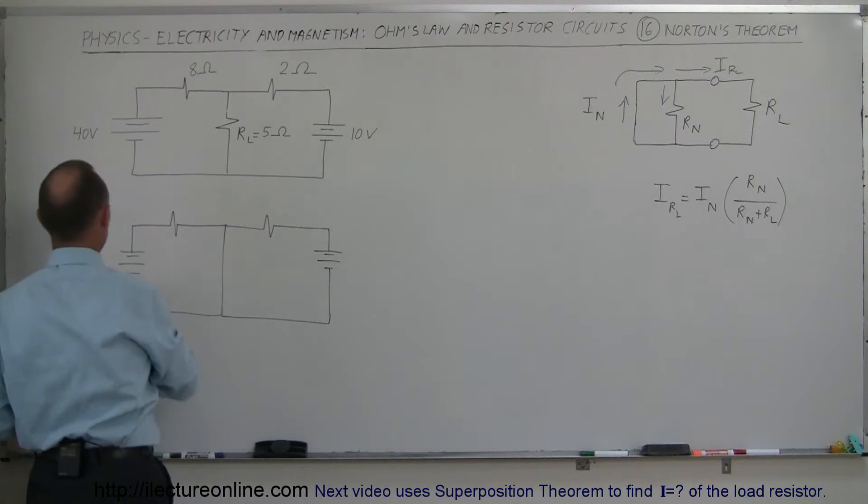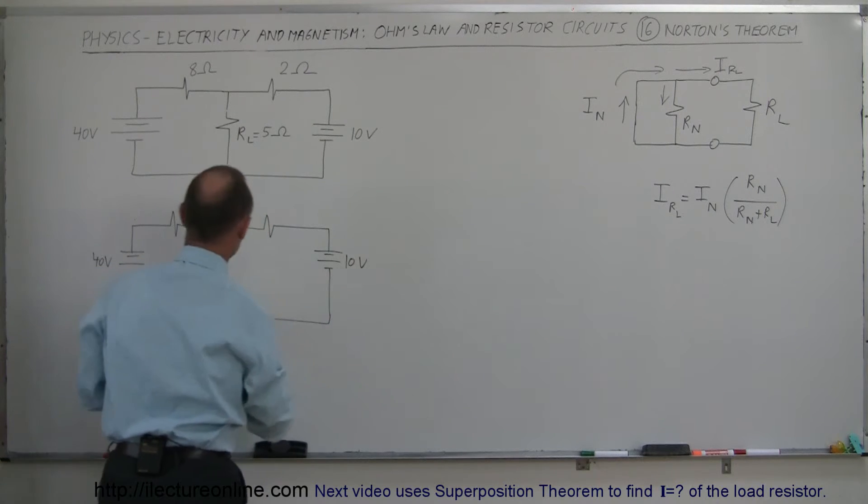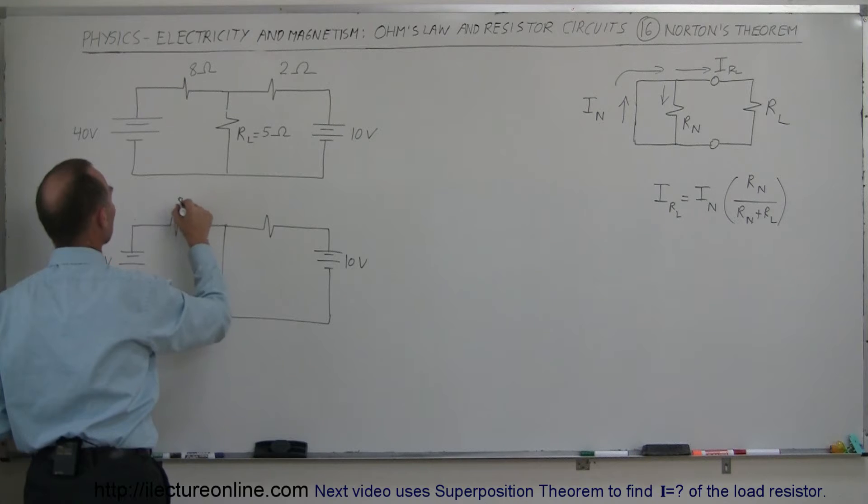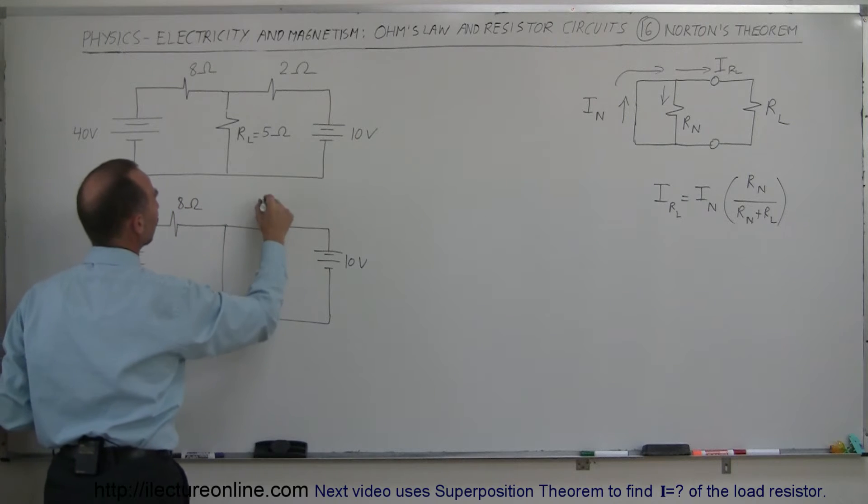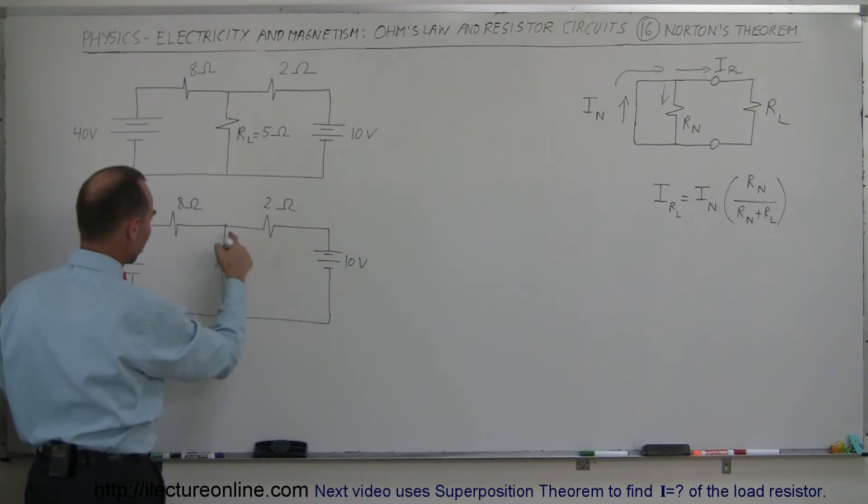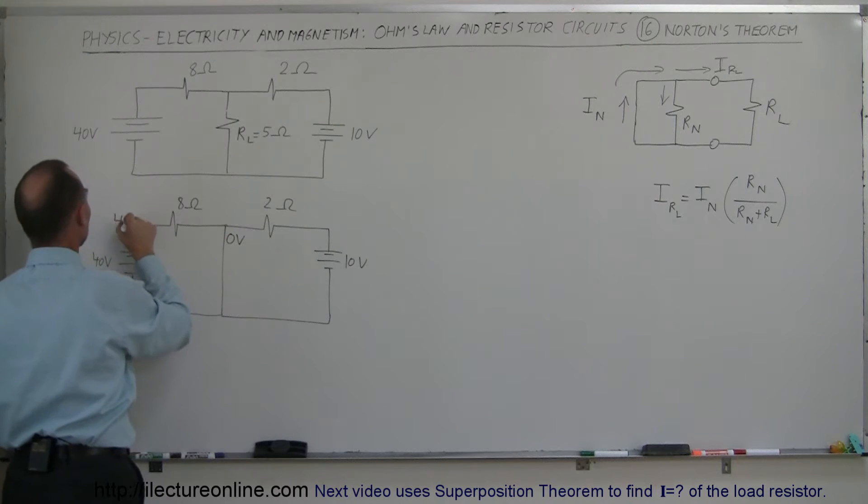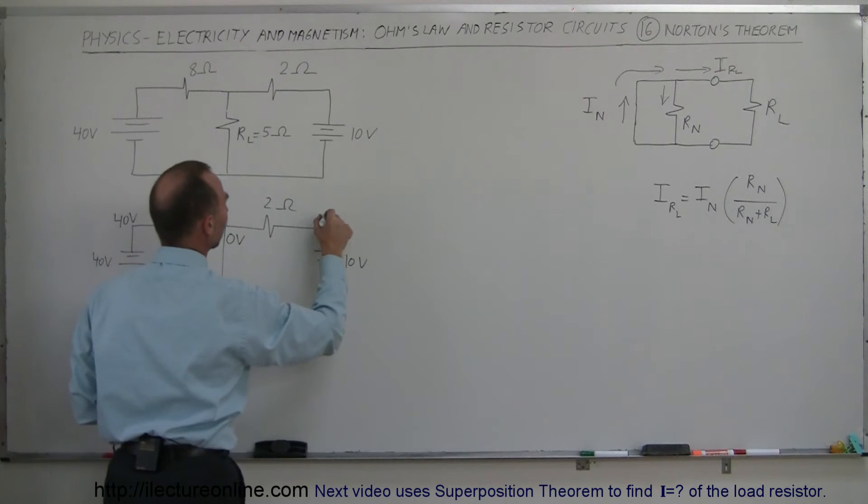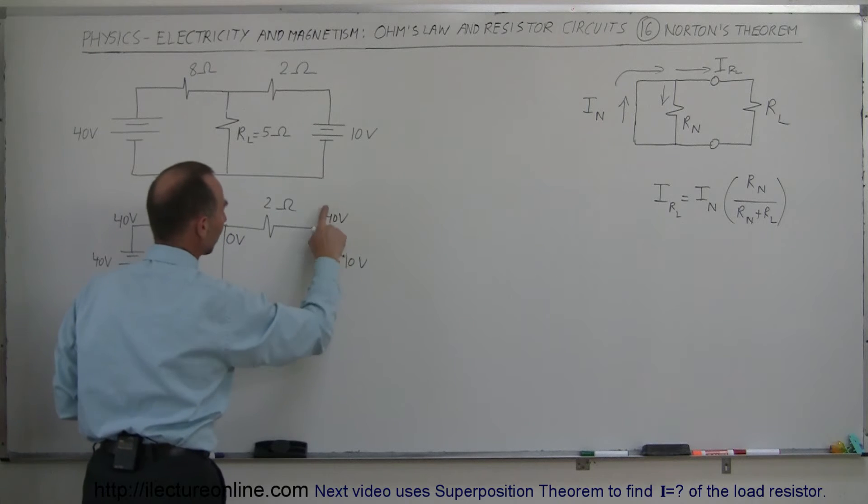So we have this resistor here, we have this battery right there. And so now we have the 40-volt battery on this side, we have the 10-volt battery on this side, this is now shorted out, we have the 8-ohm resistor and we here have the 2-ohm resistor. Since we shorted this out, this whole part of the circuit has to be at 0 volts. This here is at 40 volts. This here is at 10 volts.